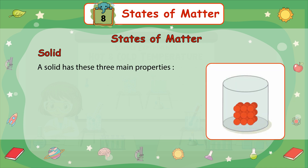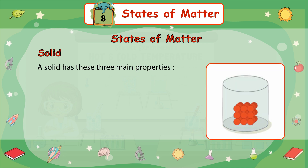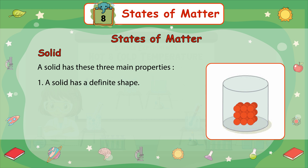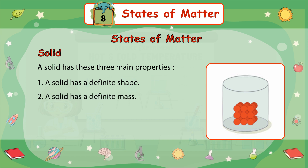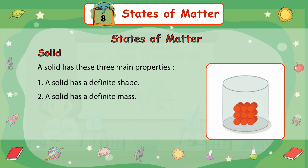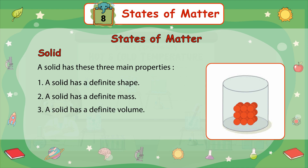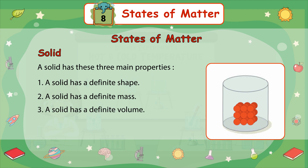A solid has three main properties. Number 1: a solid has a definite shape. Number 2: a solid has a definite mass. And number 3: a solid has a definite volume.